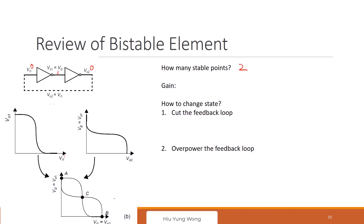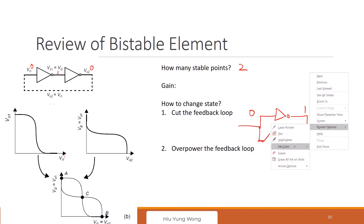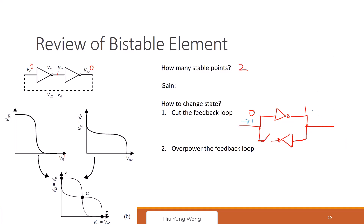Now the question is: I store some data — zero, one, zero. How do I flip it to one, zero, one? There are two ways. One is that we cut the feedback loop. For example, originally you have this one. We cut it. It was zero, one. So once we cut it, all we need to do is just change this to one, and this will go to zero automatically. And then we close it, then you store the data. So this is a way to change the data.